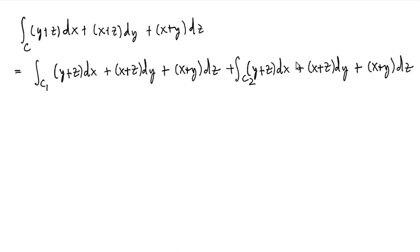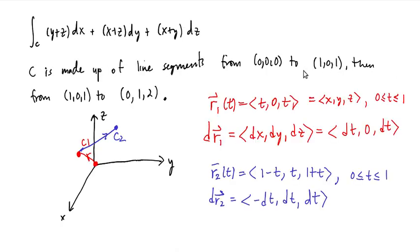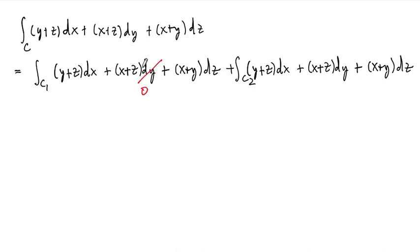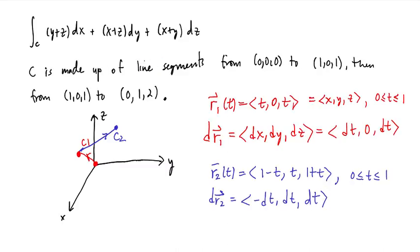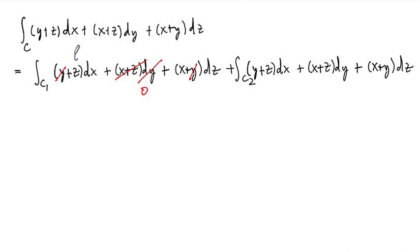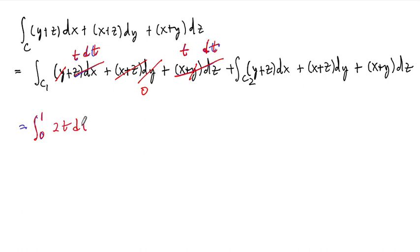For the first integral over C1, remember that y = 0 and dy = 0. So the middle term vanishes entirely. Also x = z = t, and their differentials are just dt. So both remaining terms become t dt. Adding them up, the C1 integral is ∫₀¹ 2t dt.